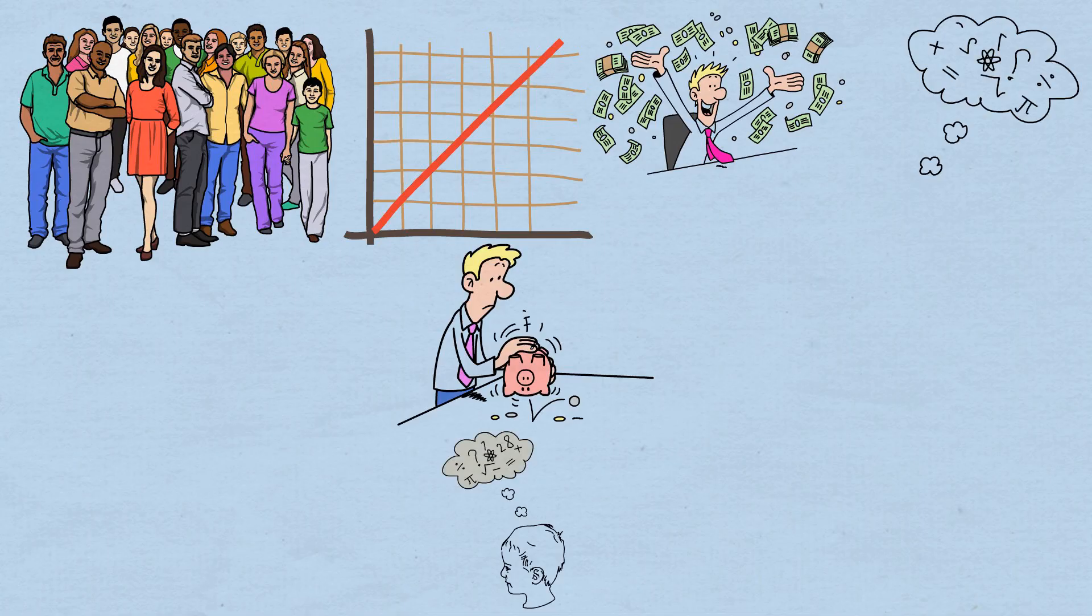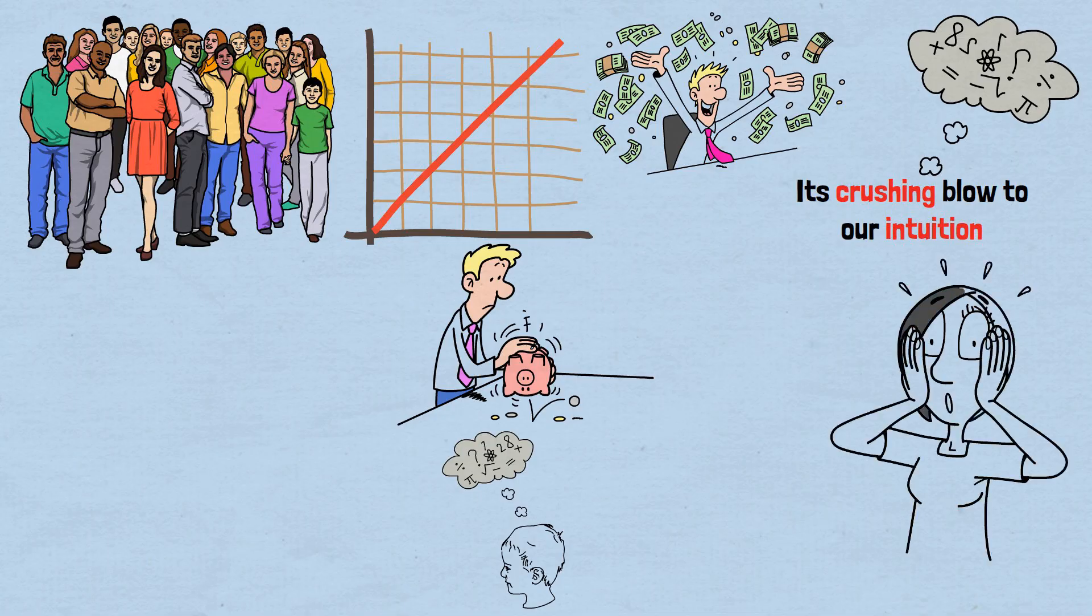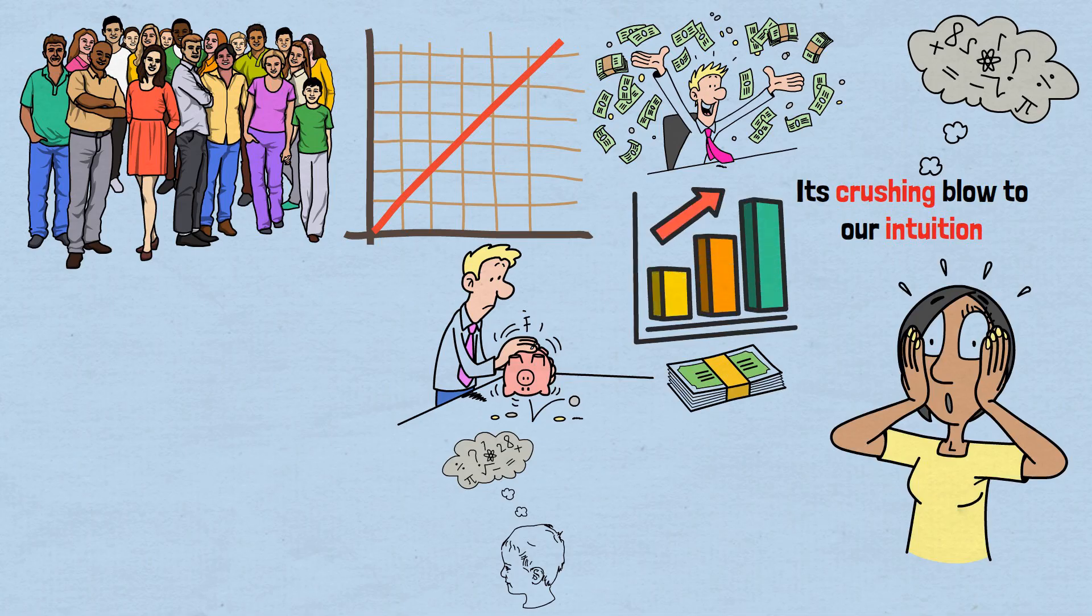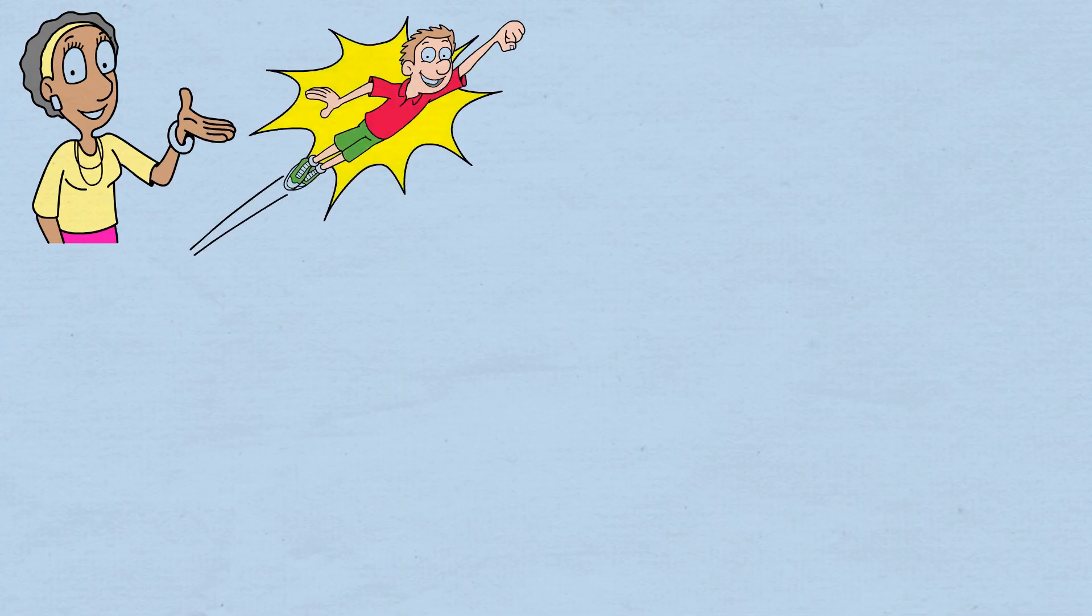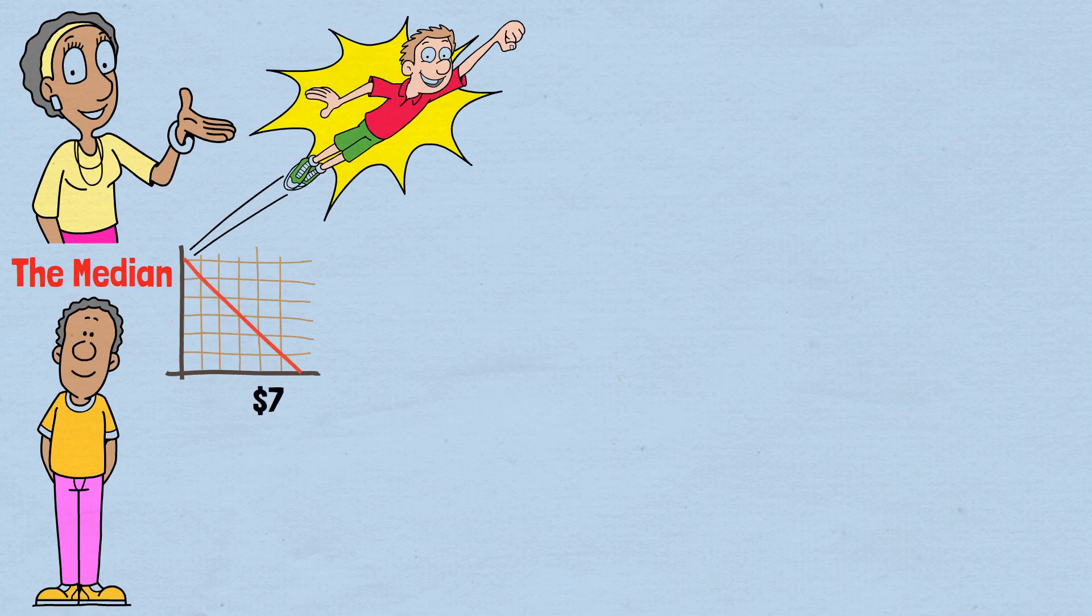Here's where mathematics delivers its crushing blow to our intuition. When we do this, something extraordinary happens. The average wealth of all participants grows exponentially, just as our arithmetic would predict. The numbers climb higher and higher, creating a beautiful upward curve that would make any investor salivate. But here's the devastating twist. While the average soars, the median, the amount that represents the typical person's outcome, plummets to a measly $7.20.